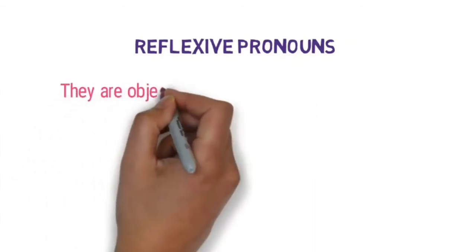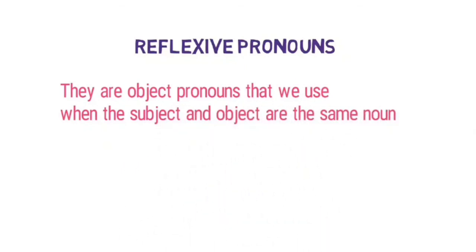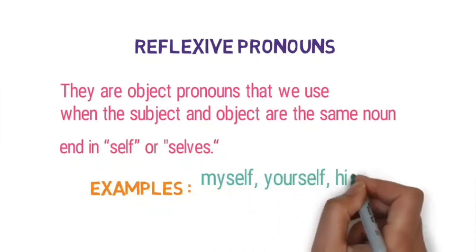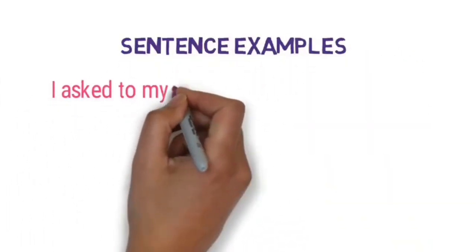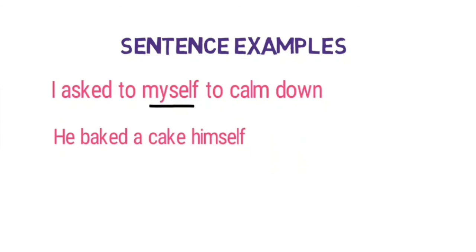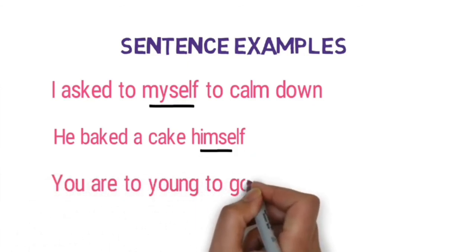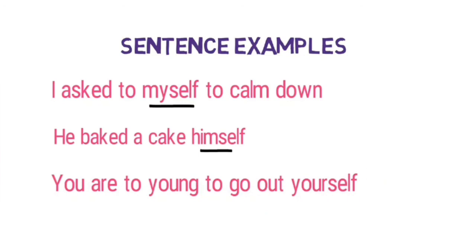And the last type of pronouns: reflexive pronouns. They are object pronouns that we use when the subject and object are the same noun. They usually end with '-self' or '-selves': myself, yourself, himself, herself, itself. 'I asked myself to calm down' — both the subject and object are 'I,' so 'myself' is a reflexive pronoun. 'He baked a cake himself' — both subject and object are 'he,' so 'himself' is a reflexive pronoun. 'You are too young to go out by yourself' — 'yourself' is a reflexive pronoun.